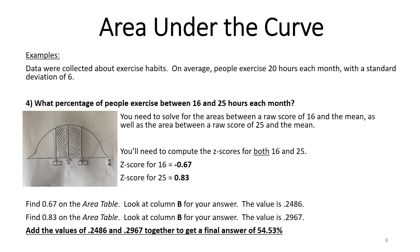For both cases, I look at column B to get the areas between those z-scores and the mean. For z equals 0.67, column B gives 0.2486. For z equals 0.83, column B gives 0.2967. To answer the question, I add those two values together: 0.2486 plus 0.2967 equals 54.53%. The answer: 54.53% of people exercise between 16 and 25 hours each month.